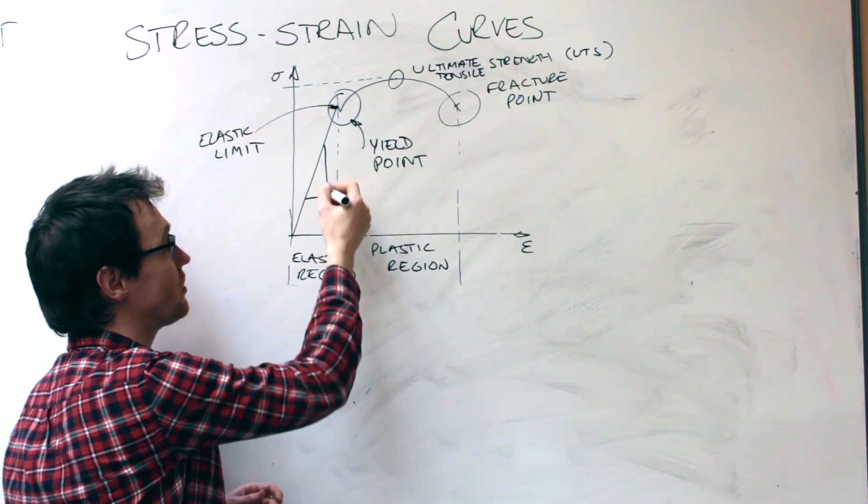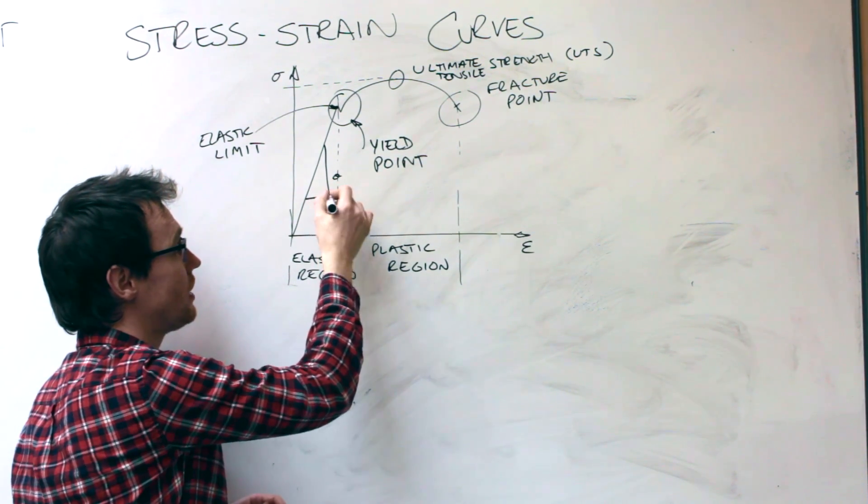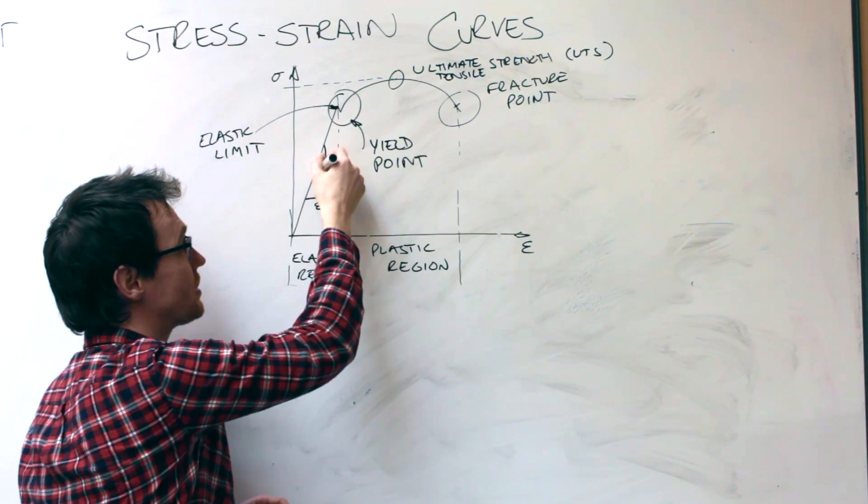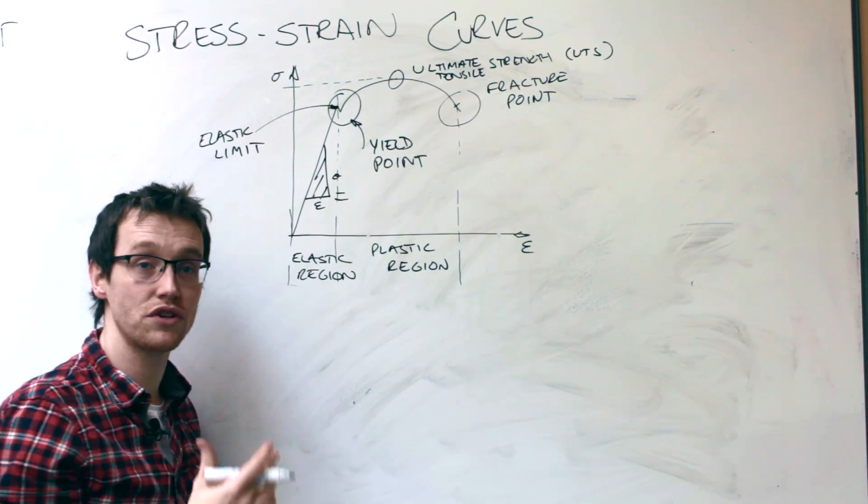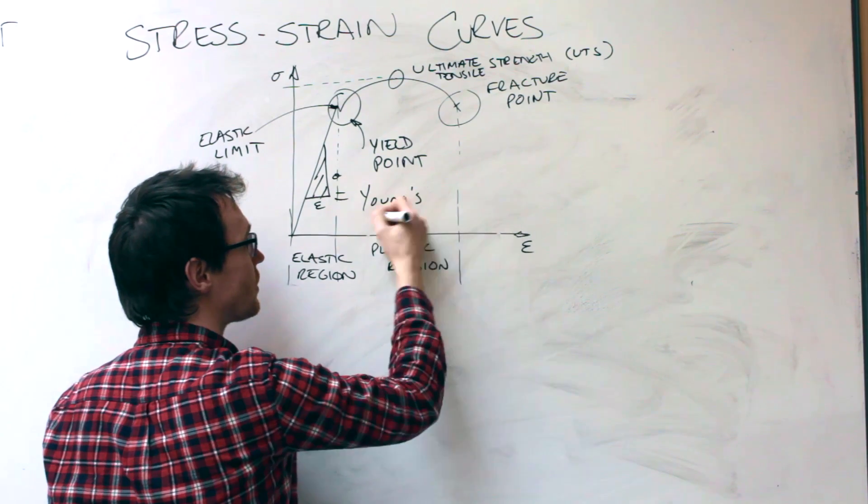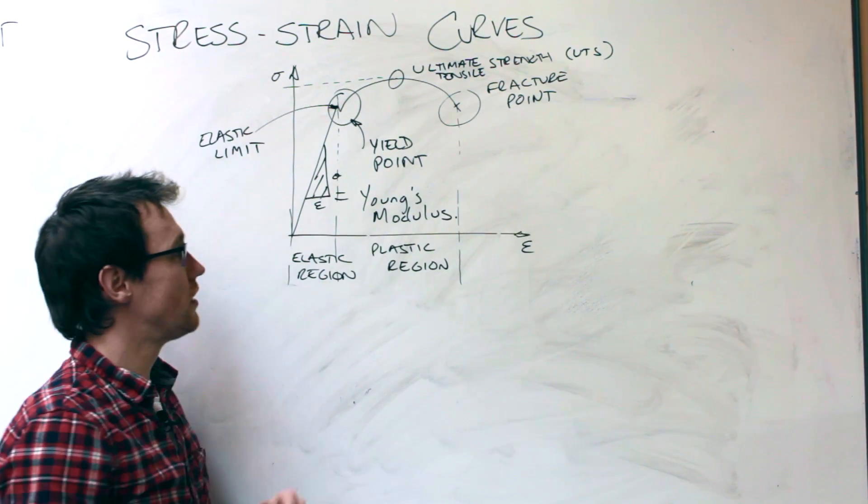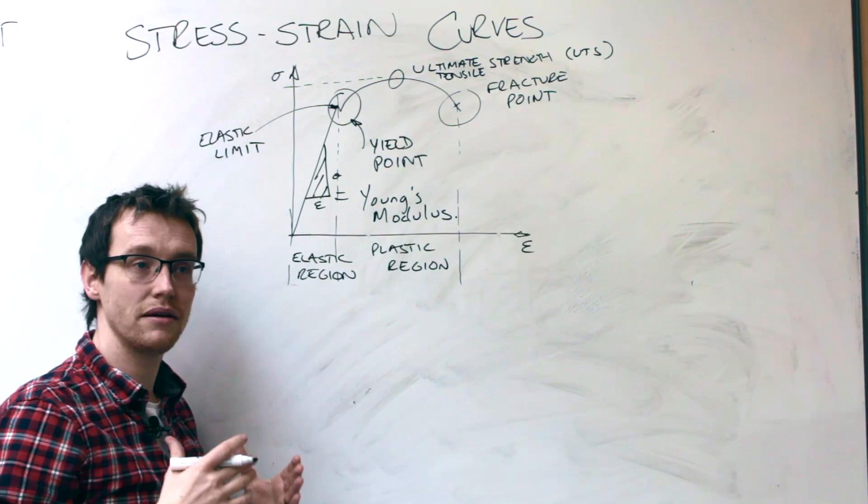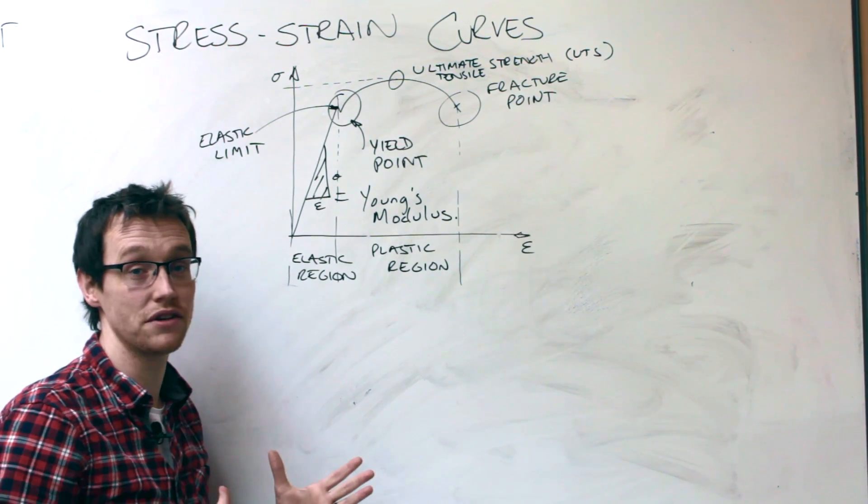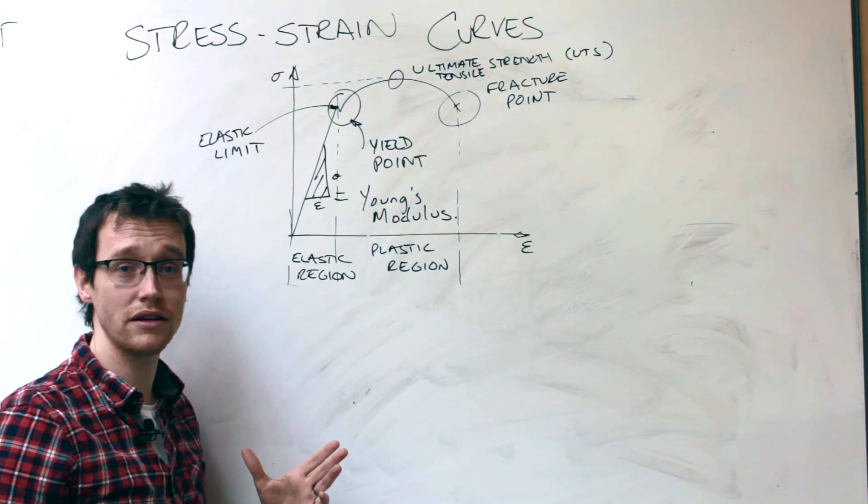And the gradient is given by stress over strain. And that, the gradient of the section here, is known as the Young's Modulus. The Young's Modulus is basically a measure of stiffness of the material.